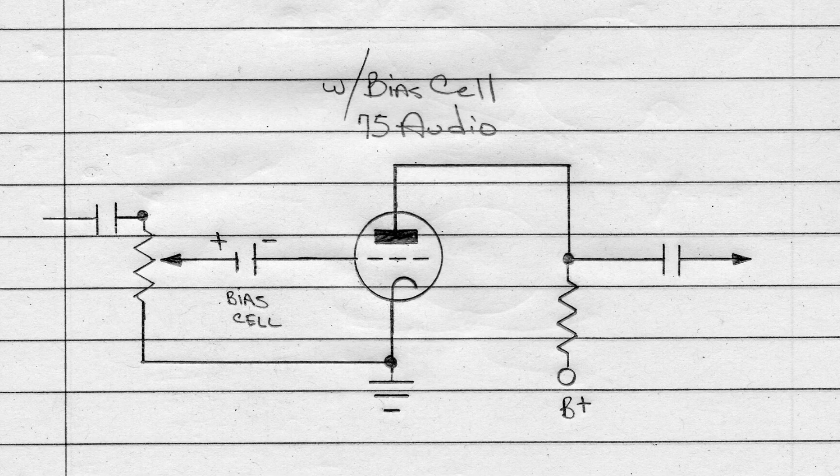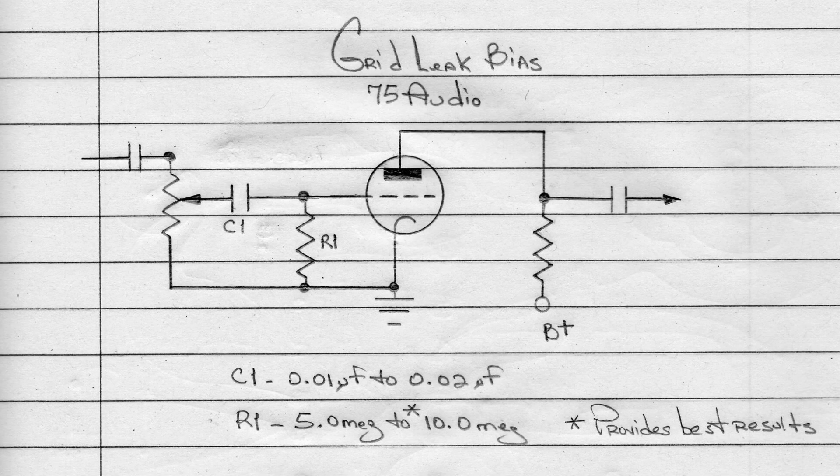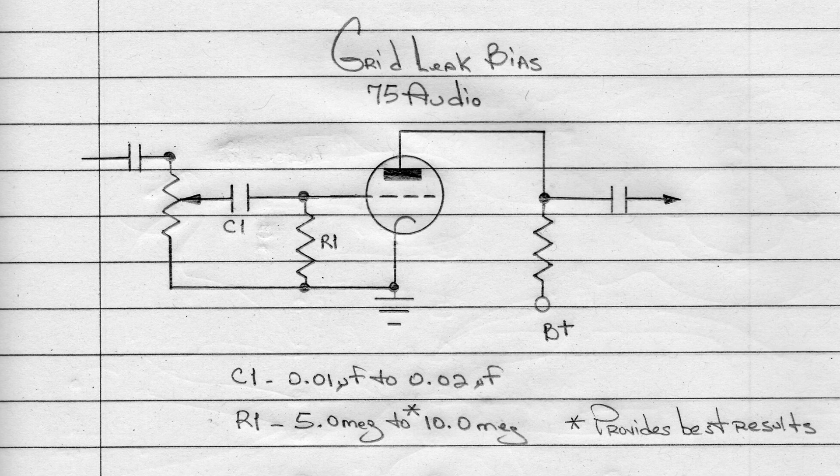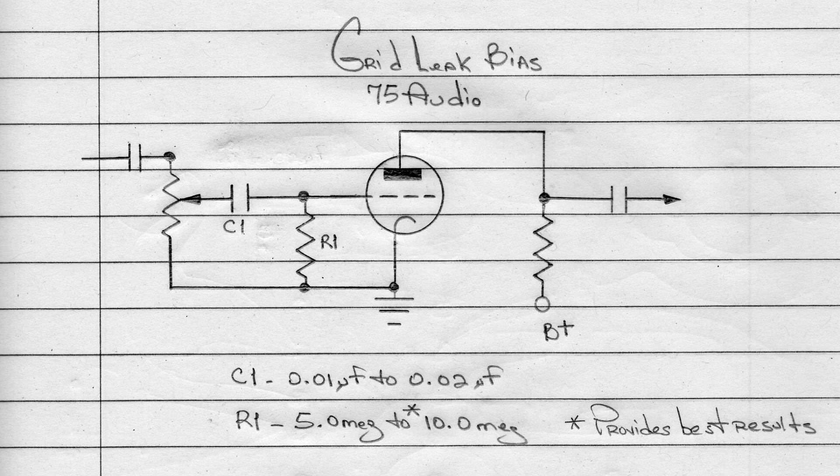You'll see the modification that someone made to bypass the cell. Again, this is configured as a grid leak bias. You can see R1 and C1 was added here, R1 being a value between 5 meg and 10 meg.